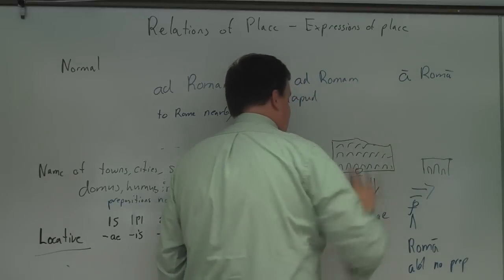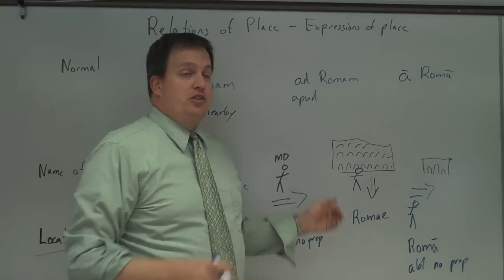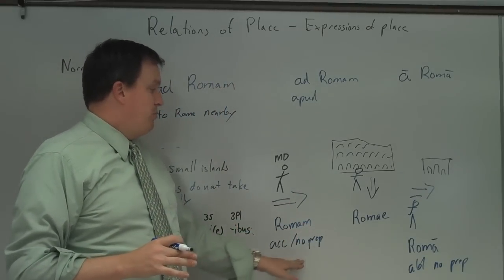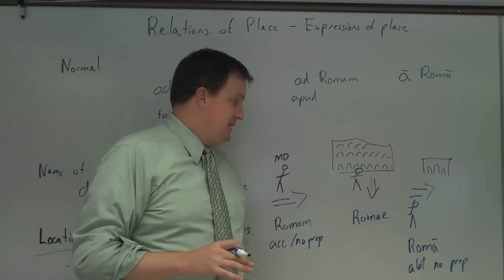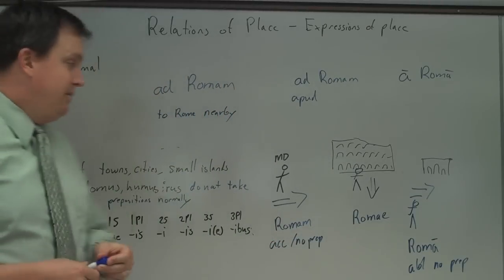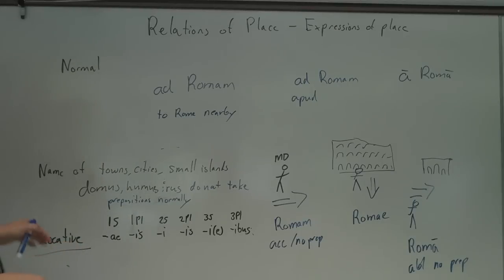This is very specialized. The main thing you want to know is for town, city, small islands, when you're going to, it's Romam, accusative, no prep. If you're at Rome, it's the locative. And we're leaving from Rome. That's the ablative with no preposition. So go ahead, make sure you've written this down. If you need to, go rewind the video. And we'll work on this in class a little bit, and we'll get this down.